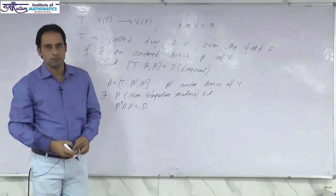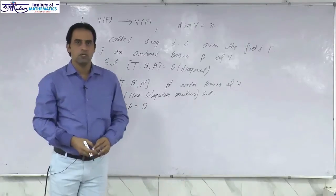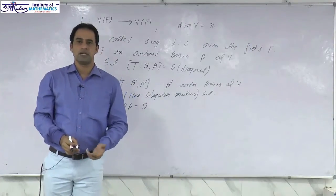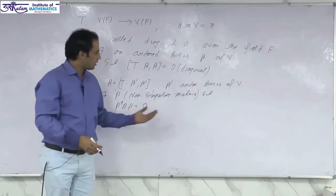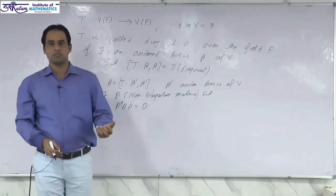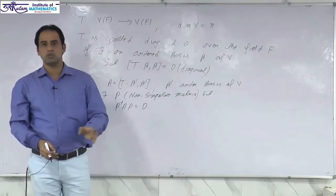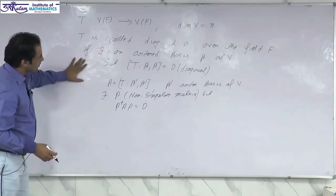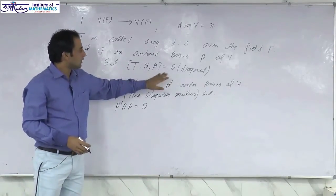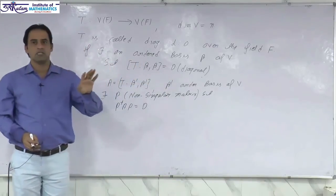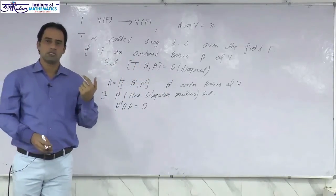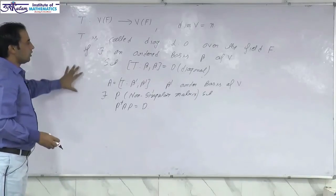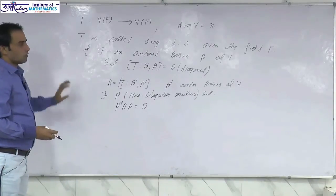We also know that the properties of similar matrices are always the same — for example, trace is the same, rank is the same, nullity is the same, and the characteristic polynomial is the same, which implies all eigenvalues are the same. So if a matrix is similar to a diagonal matrix, we can easily calculate all the properties of the given matrix. This is the basic definition of the diagonalizable operator.